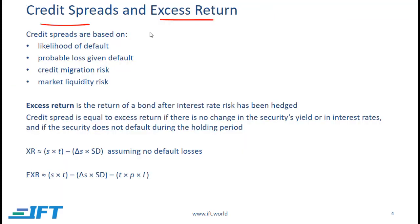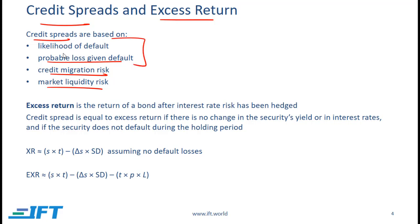Credit spreads and excess returns. Credit spreads depend on the likelihood of default, the probable loss given default, credit migration risk, and market liquidity risk — the higher these risks, the higher the credit spread. The credit loss rate is the product of the likelihood of default times the probable loss given default.